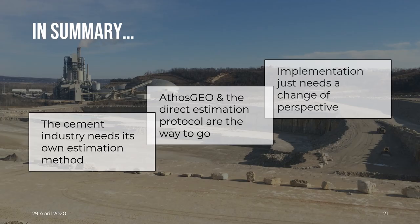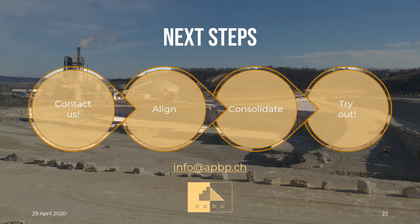In a nutshell, the cement industry needs its own method for estimating resources and reserves, as the one used in mining isn't really suitable. We're convinced that Atos GeoBlend and the Direct Estimation Protocol are the way to go for the cement industry — and in fact, you just need a change of perspective for its implementation. Contact us for a live demonstration of our approach and Atos GeoBlend to your raw material experts. Then align and decide which one of your plants will benefit the most from the direct estimation protocol — for instance, a site using large quantities of external materials. We can then help you consolidate your data and perform a joint pilot project at that site. Thanks for watching and stay tuned.